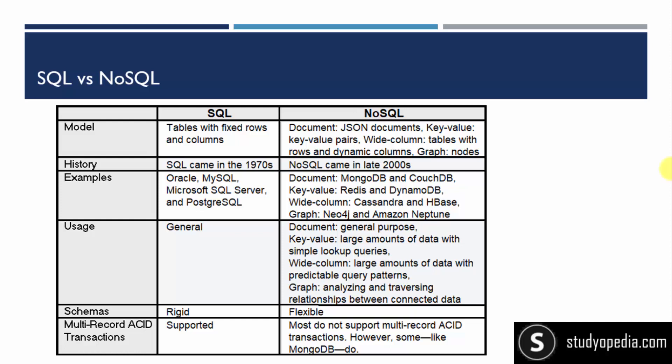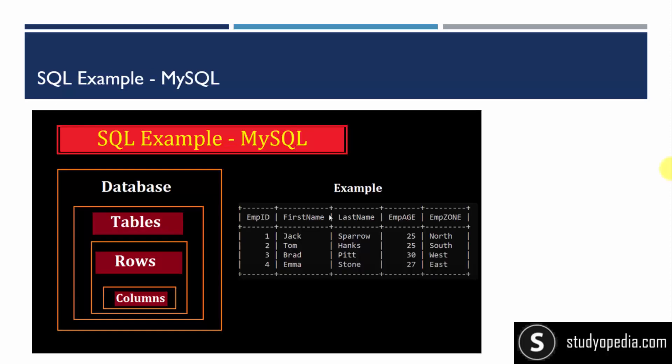Let's see an example. Here you can see the SQL example — we have shown MySQL here. SQL saves data in the form of rows and columns; it's based on RDBMS, that means based on the relational model — the relation between rows and columns in a table. Here you can see that relation.